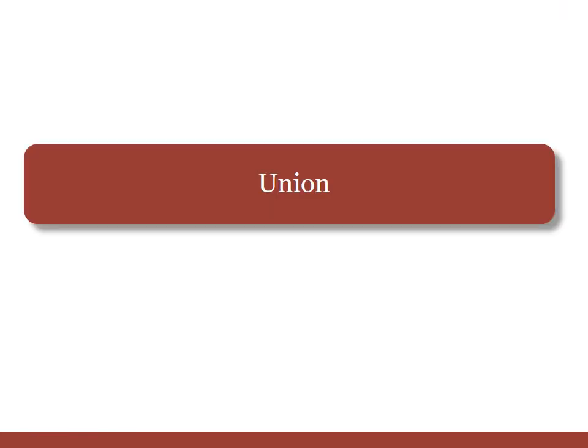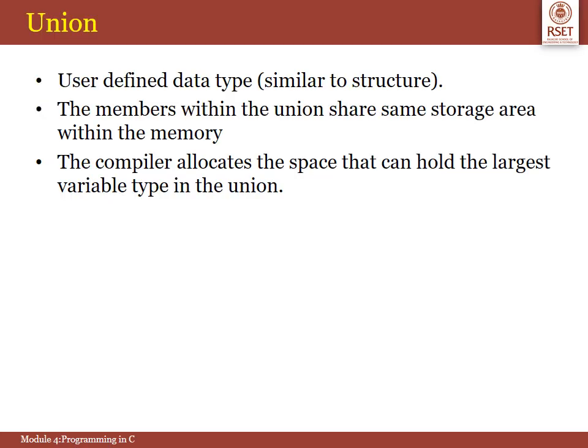First of all we will see what you mean by a union. It is a different data type, very much similar to that of a structure. Like structure we can have a number of variables inside it which will be of different data types. The actual difference between a union and structure is in memory — in structure we can have different memory locations for all its members, but in the case of union it can have only one memory location for the whole union. The compiler allocates the space that can hold the largest variable type in the union.